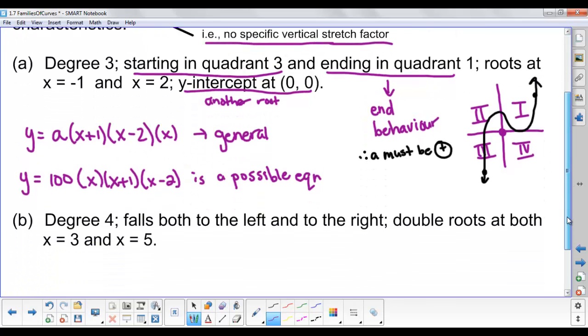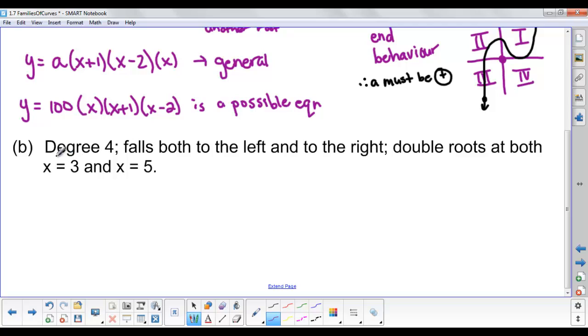Let's try one more. This time we want to create a function of degree 4, and it falls both left and right. This tells us our end behavior. When an even degree function falls both to the left and to the right, that tells me my leading coefficient must be negative. Then it says we have double roots both at 3 and at 5. Remember what double roots means—we have an exponent 2 on our bracket.